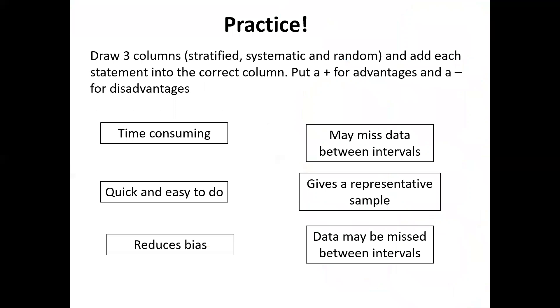So your turn now. Can you please draw three columns on your paper and divide these into our three sampling strategies: stratified, systematic and random. Can you add each of the statements below into the correct column and if it's an advantage put a plus next to it and put a minus next to it if it's a disadvantage. If you have any more questions please speak to your geography teacher.